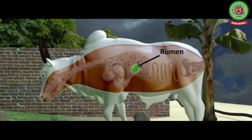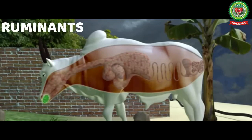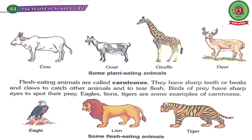The digestive system of herbivores has a special chamber called rumen. This chamber stores the food that the animal eats. When the animal is resting, the food stored in the rumen goes back to the mouth for further chewing. The animals which bring food back to their mouth are called ruminants.